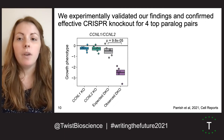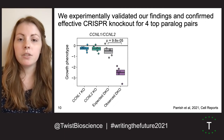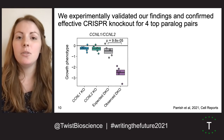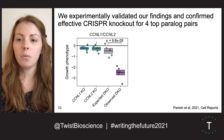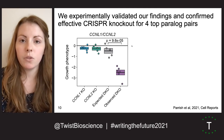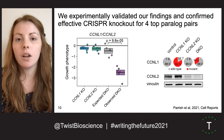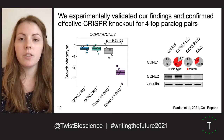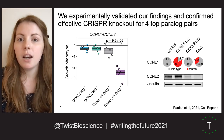We evaluated the efficacy of PIGPEN by first doing validation experiments using an orthogonal competition assay approach, and here's the data for CCNL1 and 2. You can see that this nicely recapitulates our findings from the screen. We also used genomic DNA sequencing of the guide RNA target sites and Western blotting to confirm the efficacy of our CRISPR knockouts. These experiments validated four of our top hits from the screen.